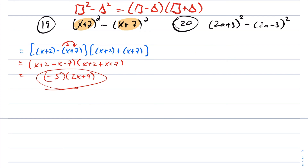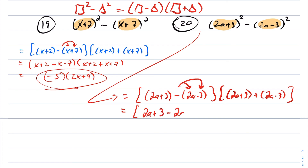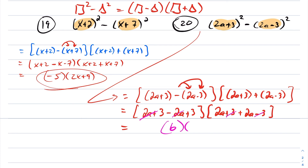For the final question, again box squared minus triangle squared. This gives x minus y times x plus y. Distributing the minus sign: 2a plus 3 minus 2a plus 3 times 2a plus 3 plus 2a minus 3. In the first factor the 2a terms cancel leaving 6; in the second factor the 3s cancel leaving 4a. The whole expression reduces to 24a.